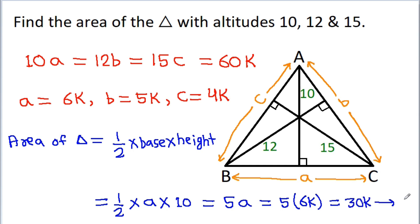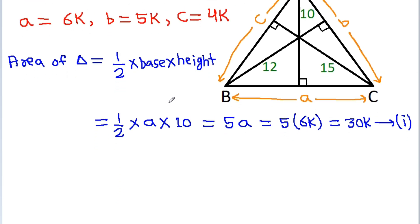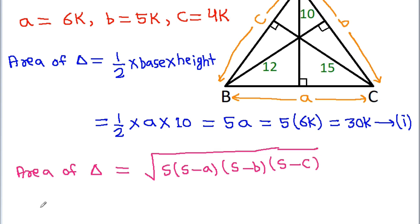Let's call this equation 1. Now we also know that the area of a triangle by Heron's formula is equal to the square root of S times (S minus A) times (S minus B) times (S minus C), where S is equal to (A plus B plus C) divided by 2.